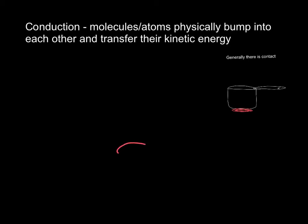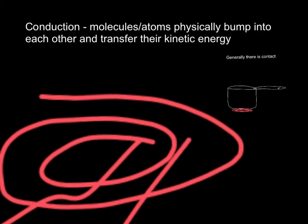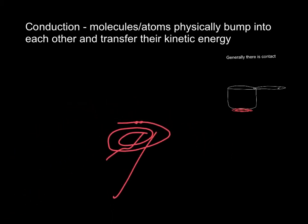The electric burner has a coil, and that coil is made out of molecules. Each one of those tiny molecules is vibrating back and forth, getting all hot — because that's really what heat is: a bunch of vibrations.